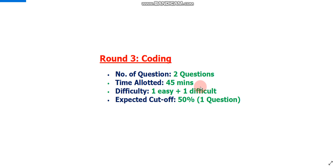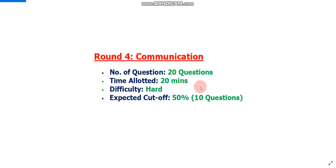Now let's move to round 4. Round 4 is the communication round. In this section there were a total of 20 questions and you had to solve these 20 questions in 20 minutes. The difficulty level was hard, and that's why the expected cutoff for this communication round is 50%. If you solve 10 questions out of 20 correctly, you are expected to clear this round.